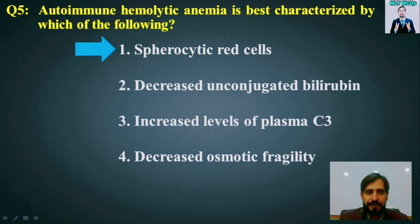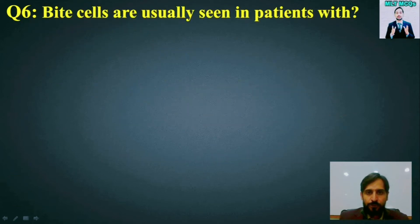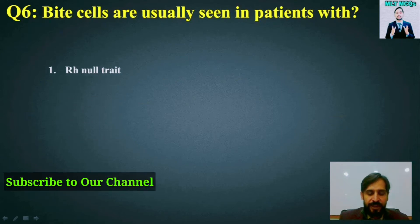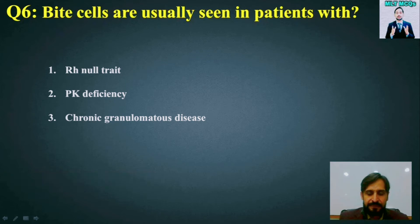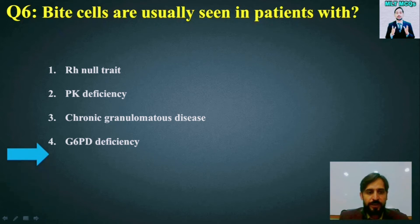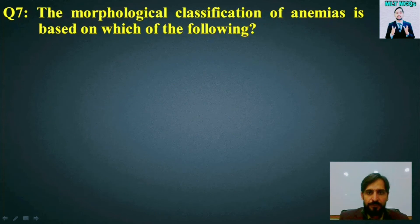MCQ number 6: Bite cells are usually seen in patients with which condition? Options are: Rh null trait, PK deficiency, chronic granulomatous disease, or G6PD deficiency. The right answer is option number 4 — bite cells are usually seen in patients with G6PD deficiency.